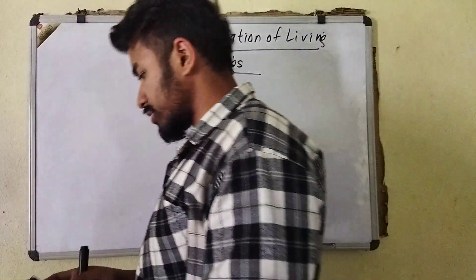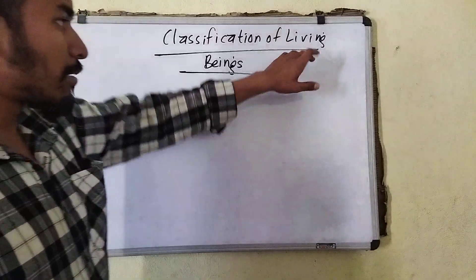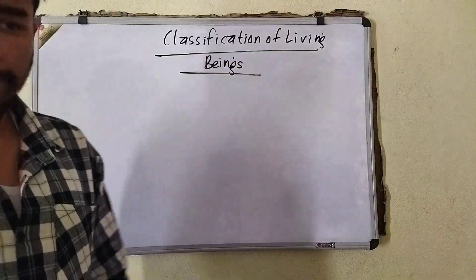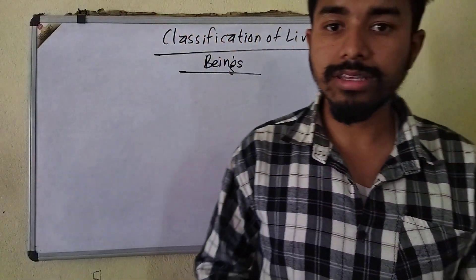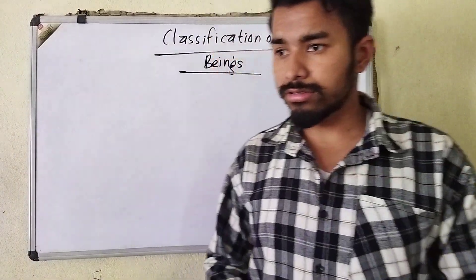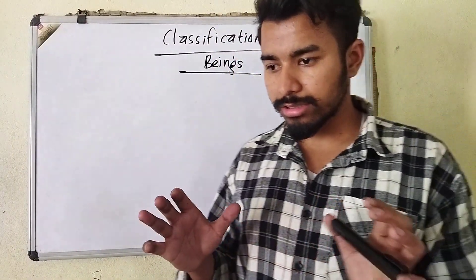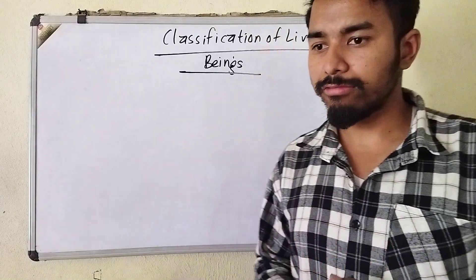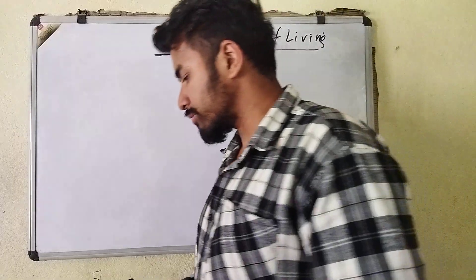The first one is classification, and this is from living beings. Biology is the branch of science which deals with living beings, their survival, reproduction process, living standard, way of living, everything, and their surroundings too.